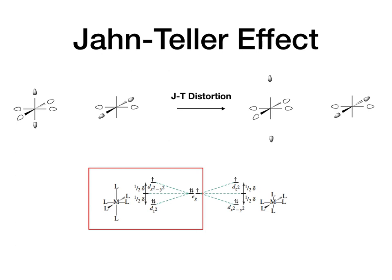There's another type of distortion that is exactly opposite: having two ligands on the z-axis pushed closer to the metal, while the other four on the x and y axes are pushed slightly away. The analysis of the MO diagram for this case is left as an exercise, and that scenario is essentially shown on the right side of the diagram.